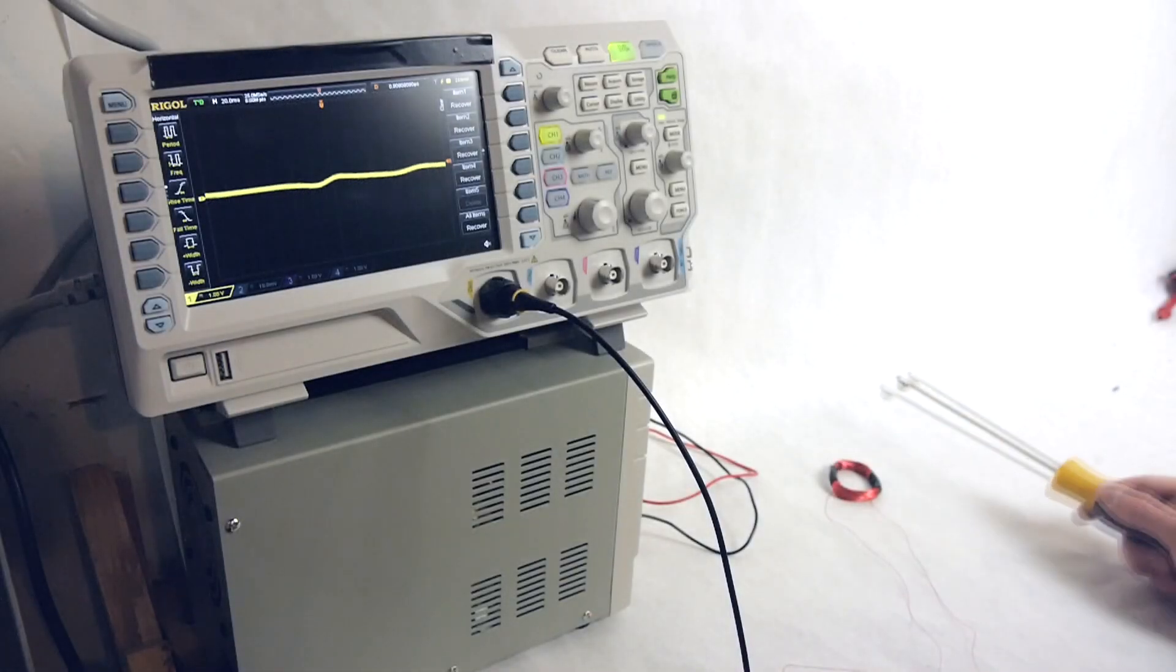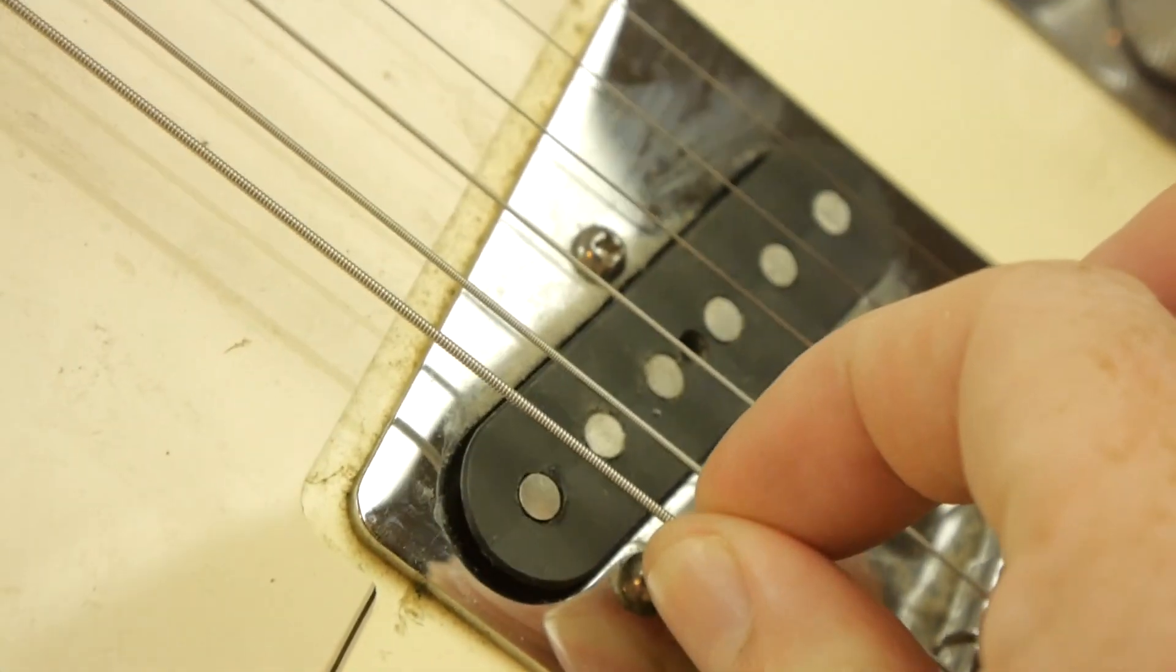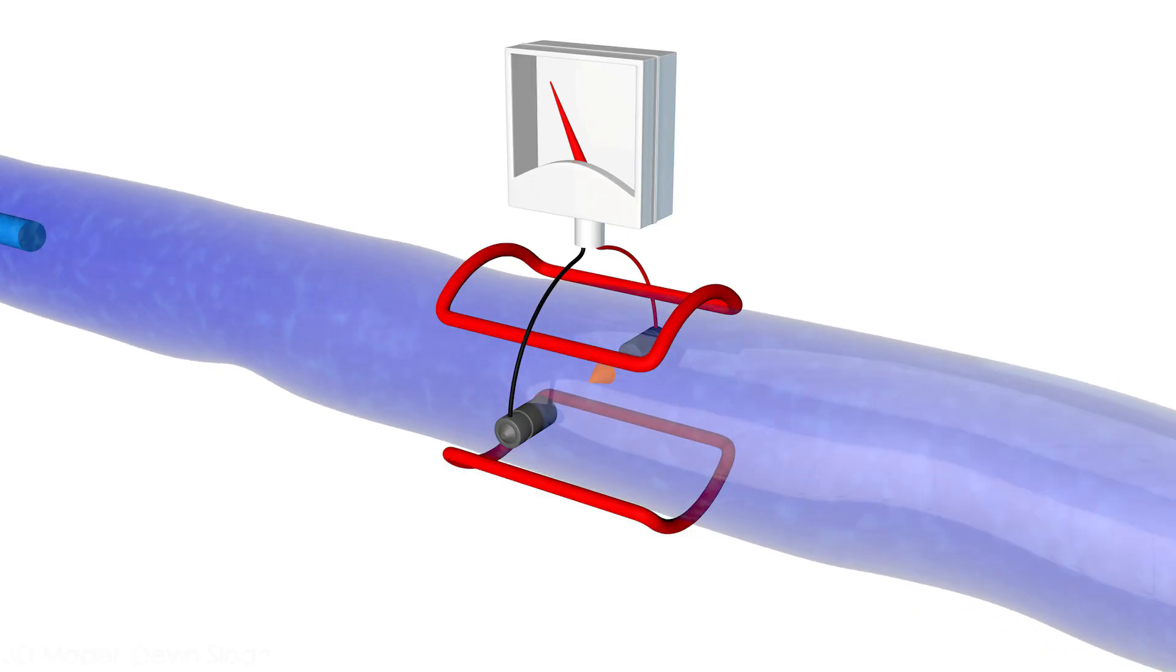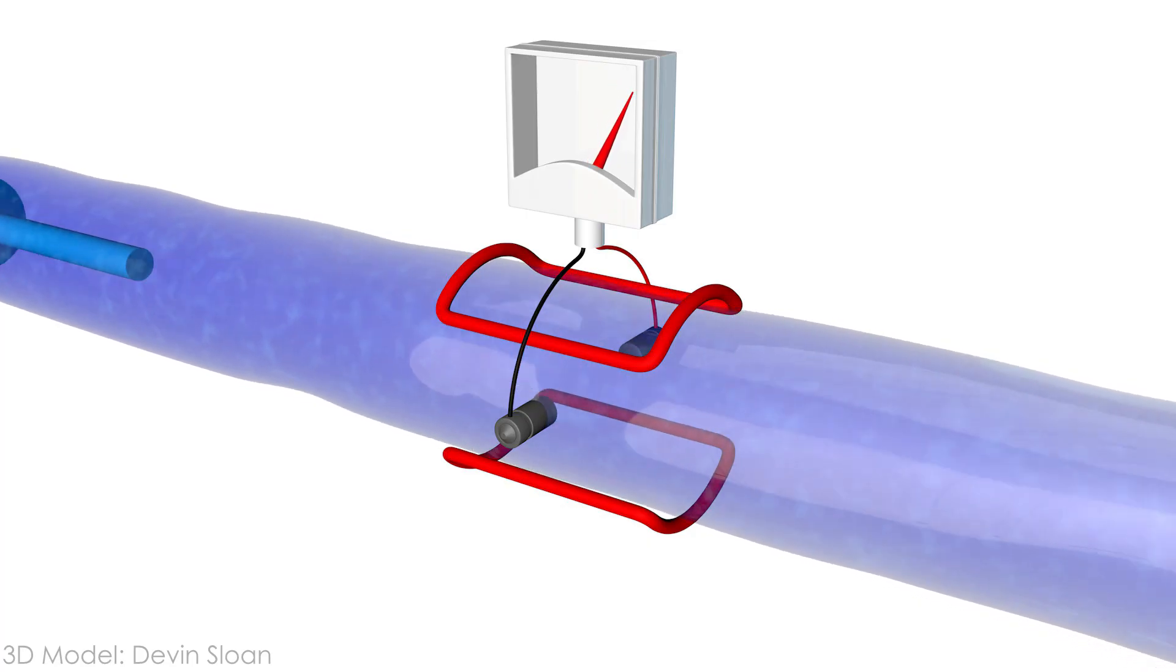From generators at a power plant to the pickups on an electric guitar, Faraday's law of induction is working behind the scenes in some of the most unlikely places, including an ingenious method of measuring the flow of liquid through a pipe. I am a bit disappointed I couldn't get the prototype working better, but I think there were some good lessons that came out of it regardless.